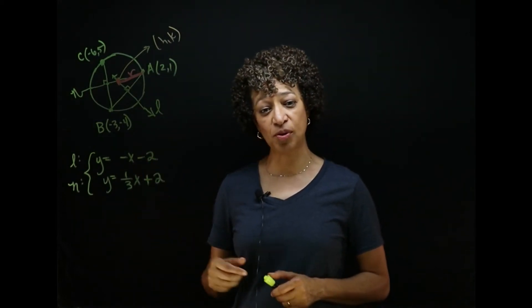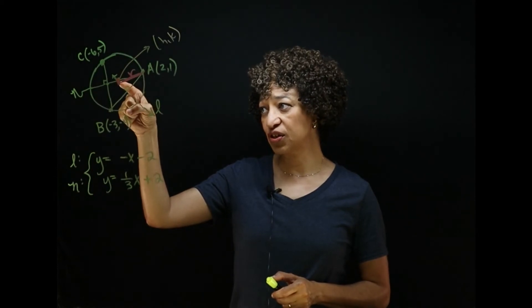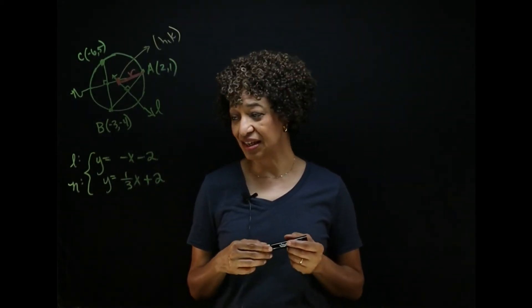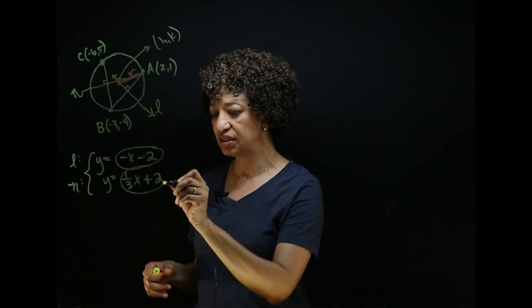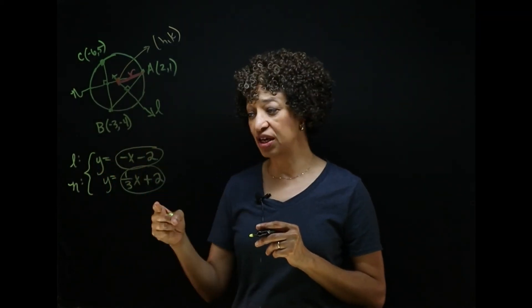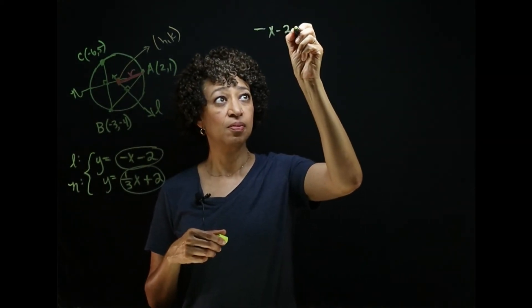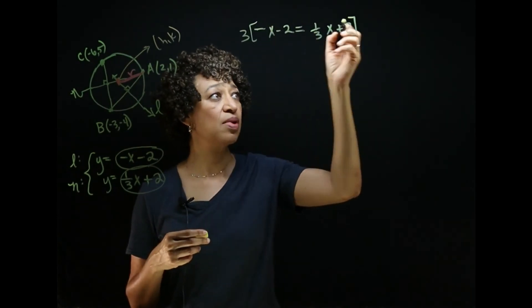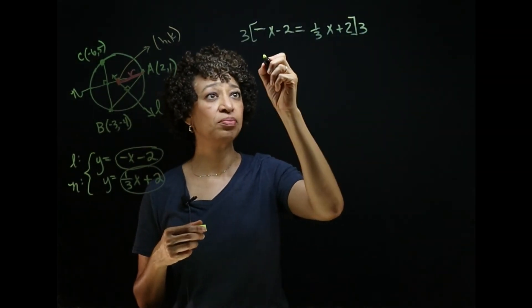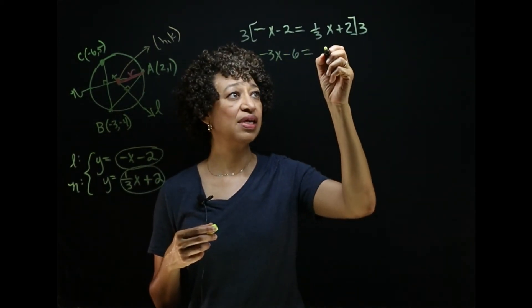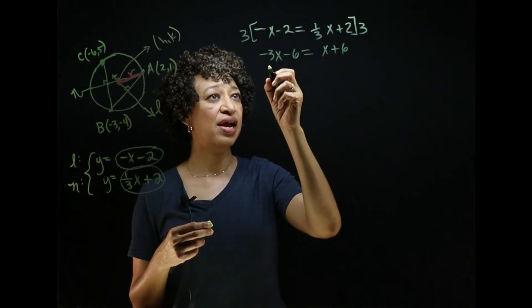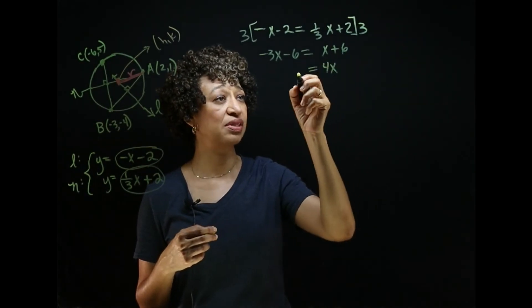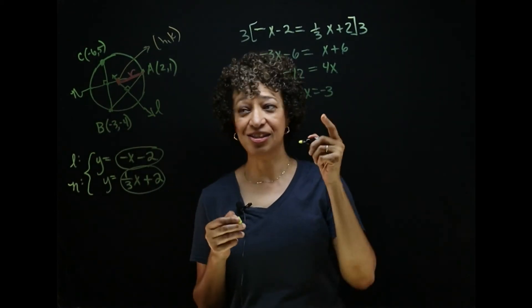We now have the equations of both perpendicular bisectors and we'll find their intersection by solving this system of linear equations. Using substitution — setting them equal to each other — I'll clear fractions by multiplying both sides by three, giving negative three x minus six equals x plus six. Adding three x to both sides and subtracting six from both sides gives four x equals negative twelve, so x equals negative three. That is the x-coordinate of our center.